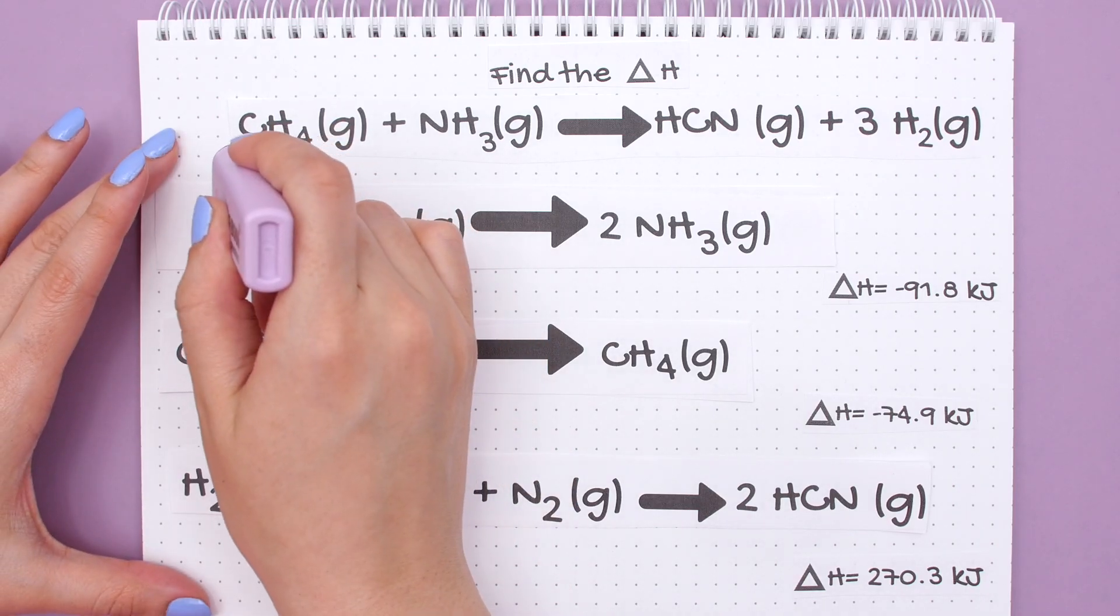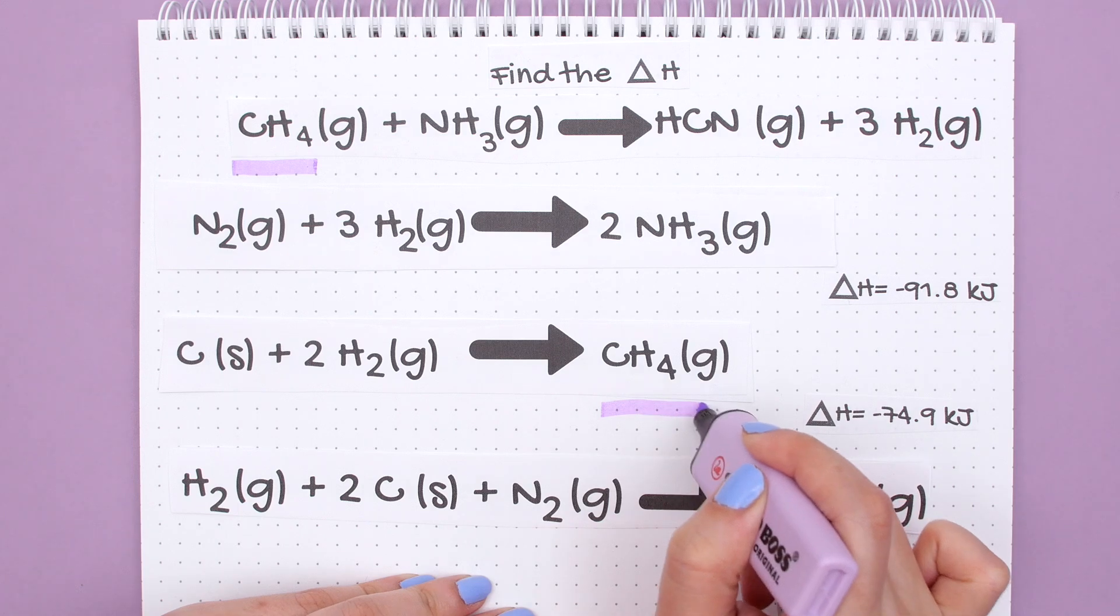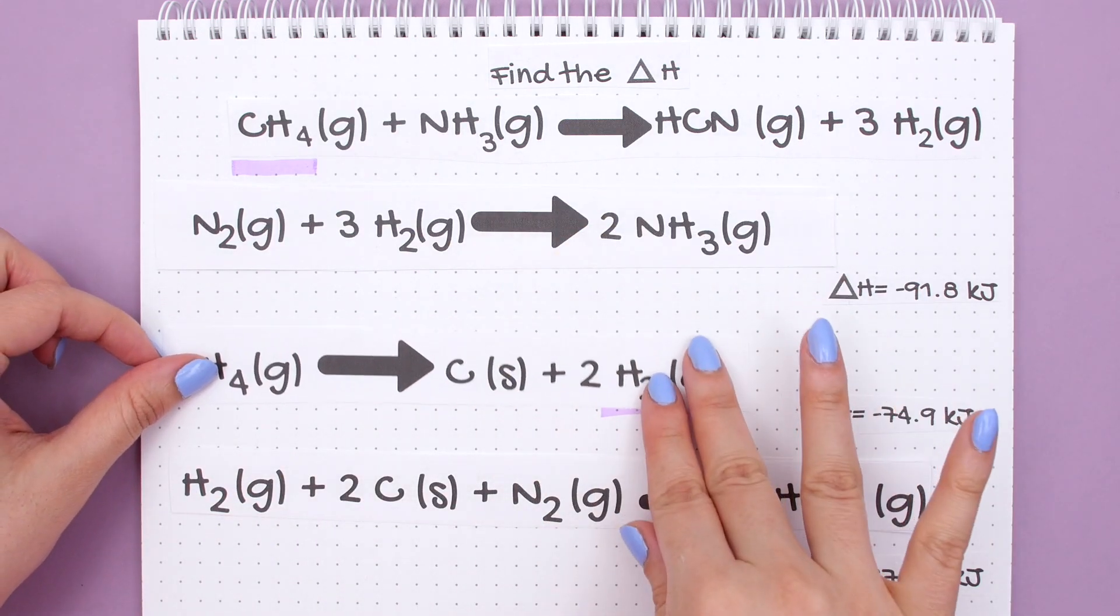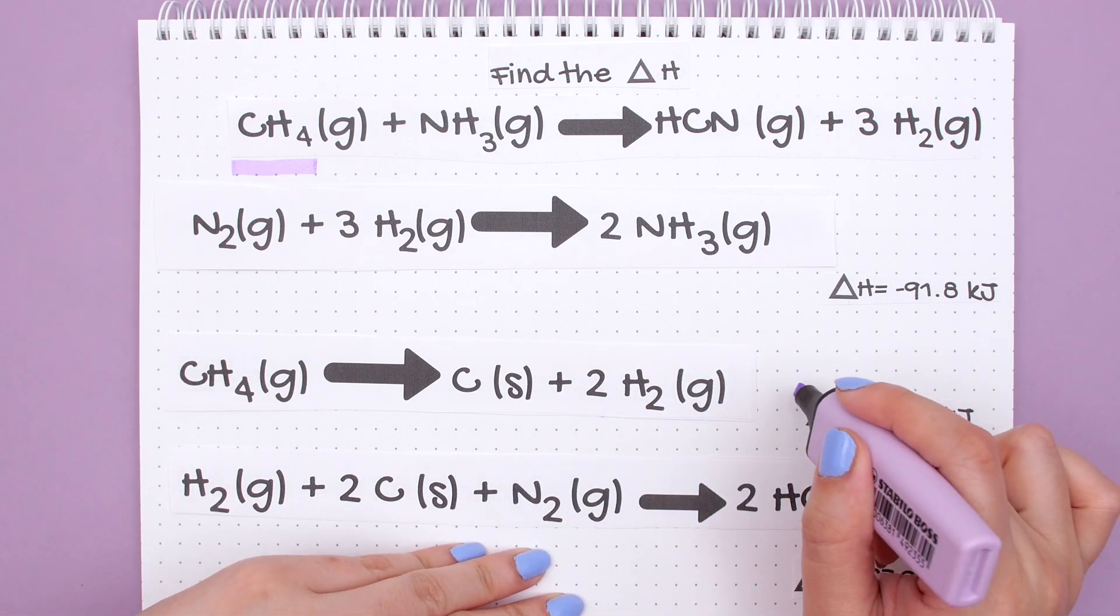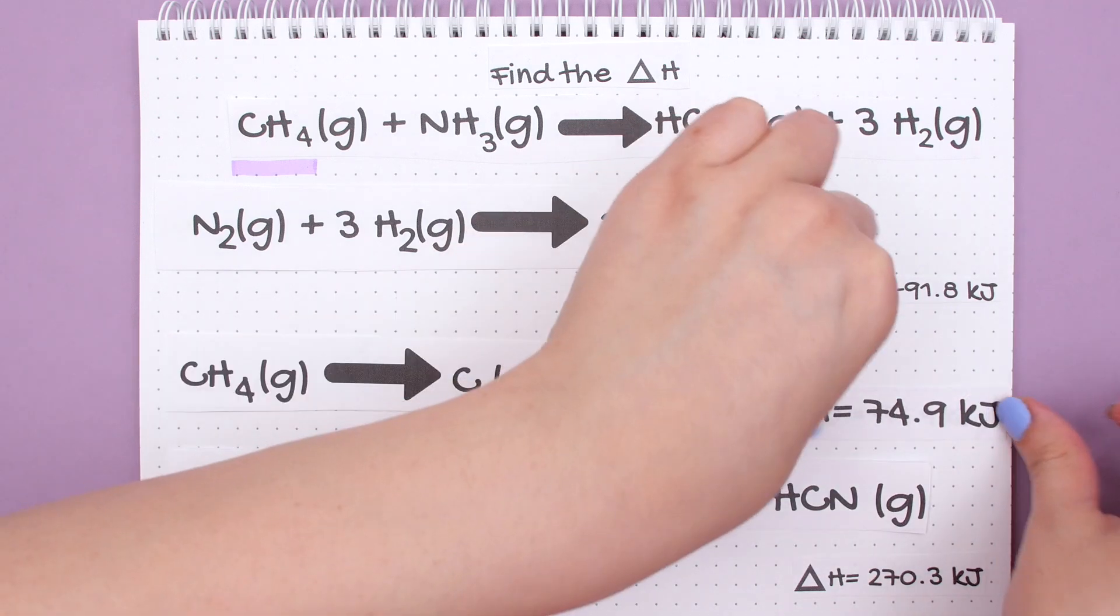Starting with our first reactant CH4, we'll look and see where CH4 is in the below reactions and it is not on the correct side so we will flip the reaction. Whenever you flip a reaction you must multiply the enthalpy change by negative one, so our enthalpy change is now positive.